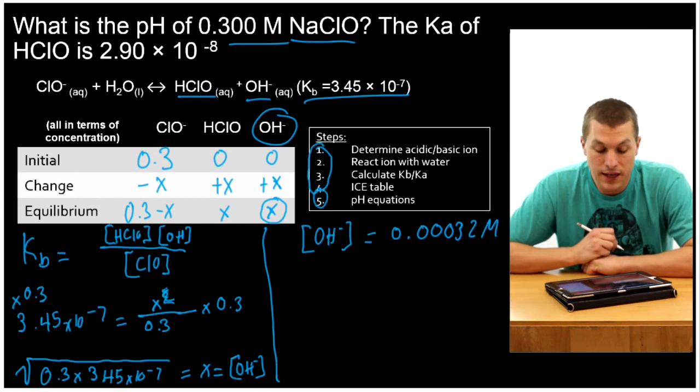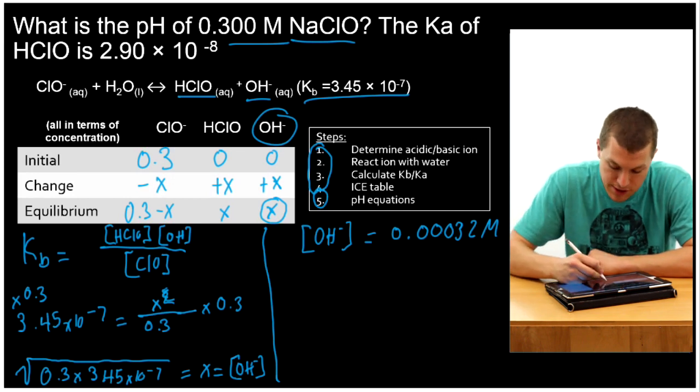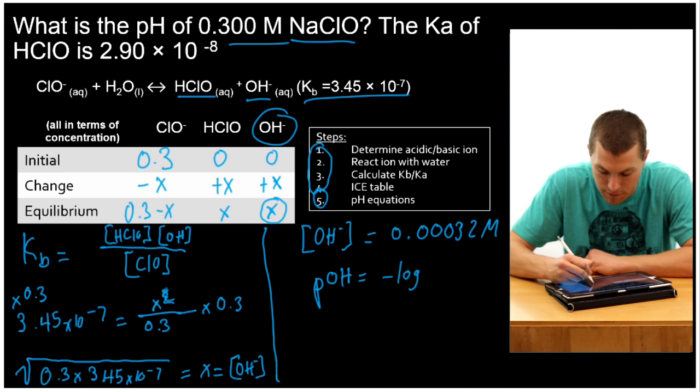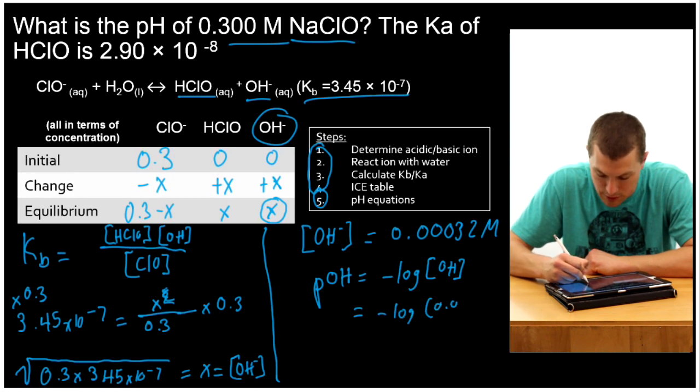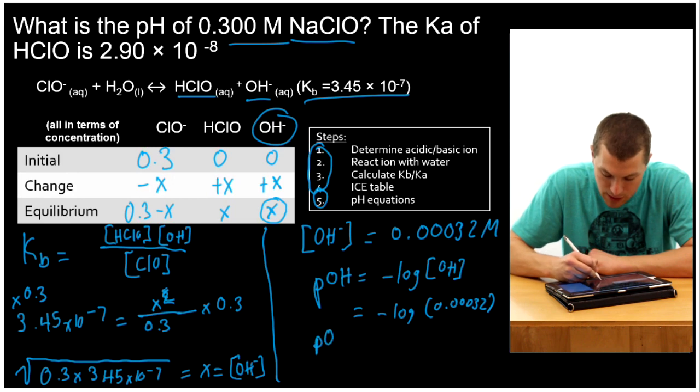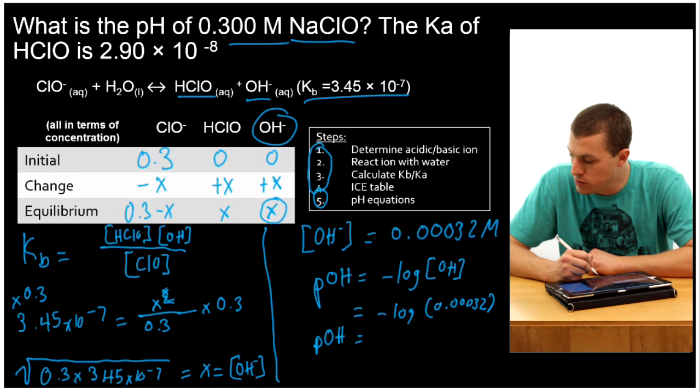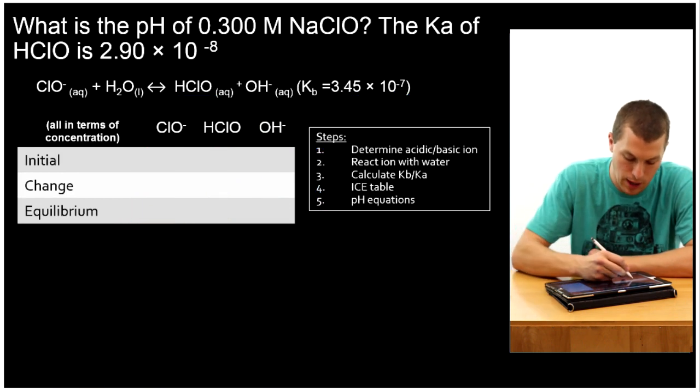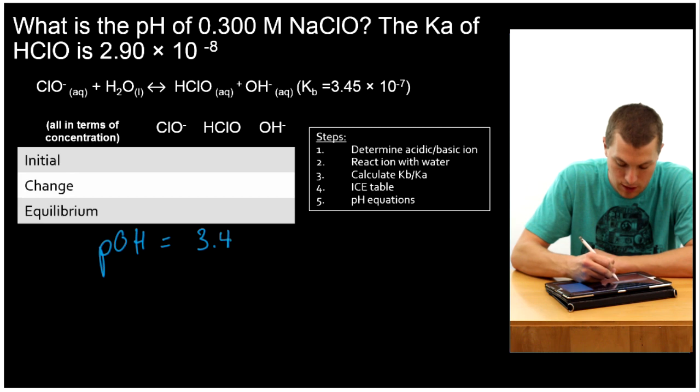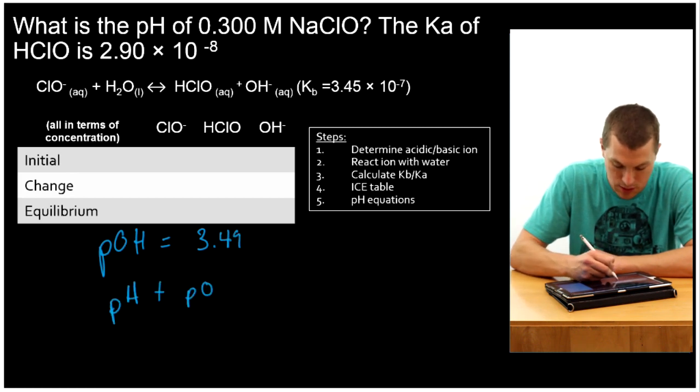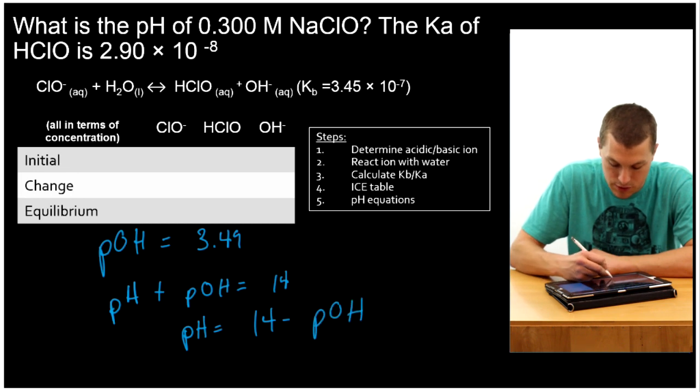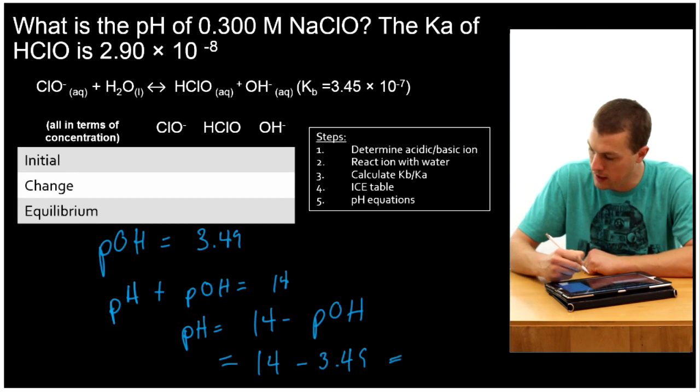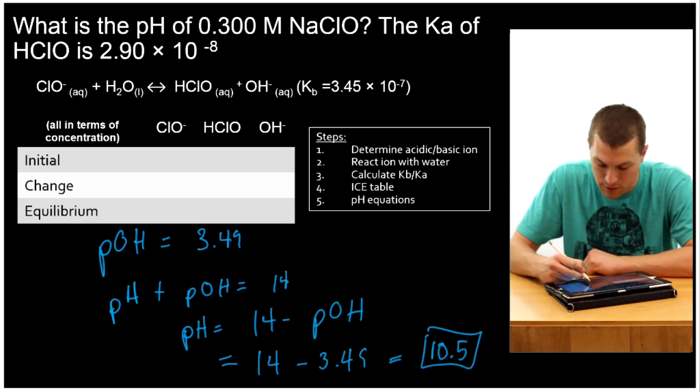Lastly, we just got to use our pH equations. Here, since we have the concentration of hydroxide, we're going to use the pOH expression to start off. The pOH expression tells us that the negative log of the concentration of hydroxide ions is equal to the pOH. So that's going to be the negative log of 0.00032. And when I do that, I'm going to get pOH is equal to 3.49. Lastly, we know that our pOH is equal to 3.49. And we just remember that pH plus pOH is equal to 14. And so that means that our pH is equal to 14 minus pOH. So 14 minus 3.49 is going to give us a pH of 10.5. So that's our pH.